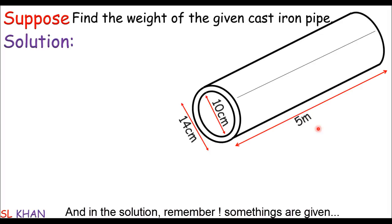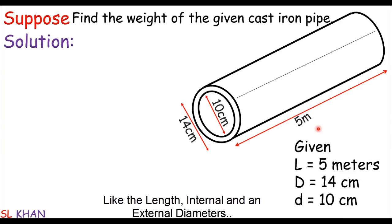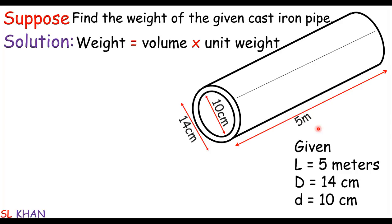And in the solution, remember some things are given like the length, the internal and external diameters. So in the solution, the weight of this cast iron pipe must be its volume times unit weight of the material.